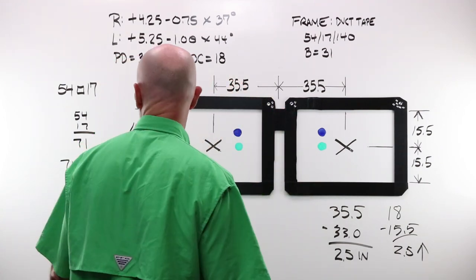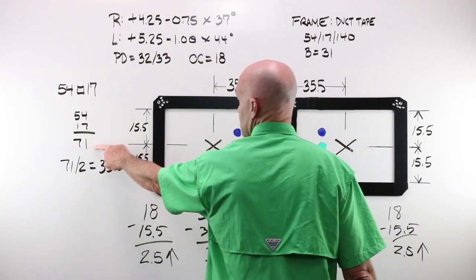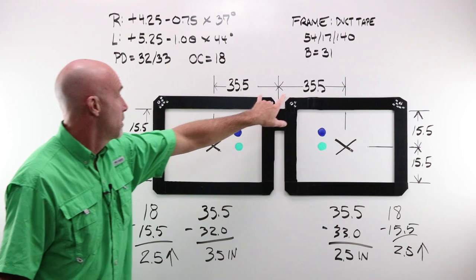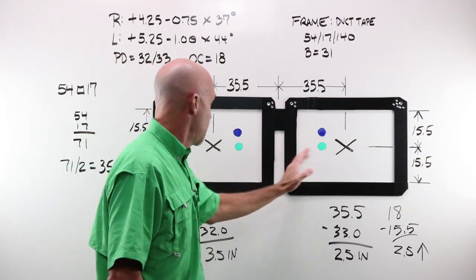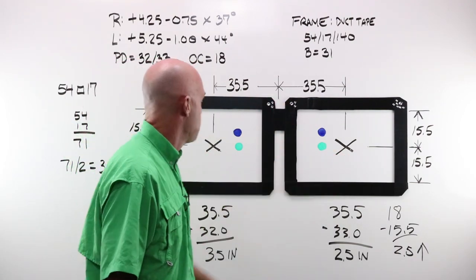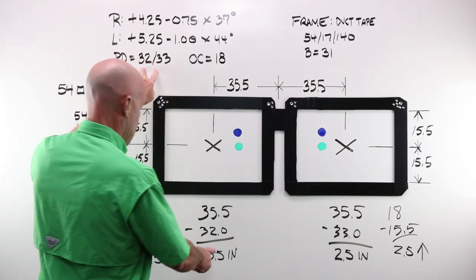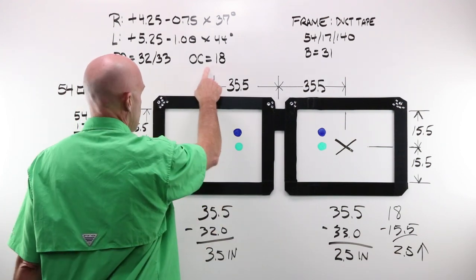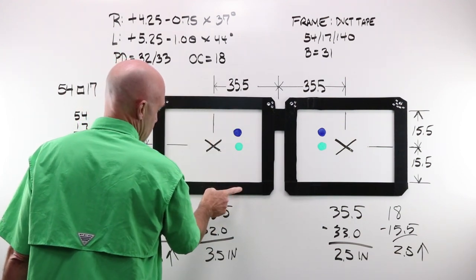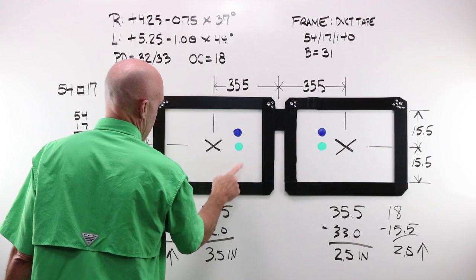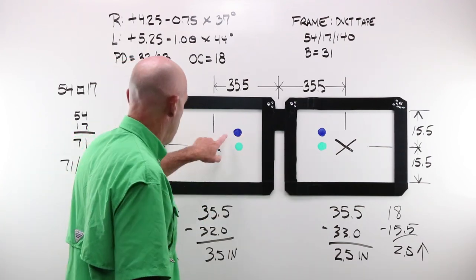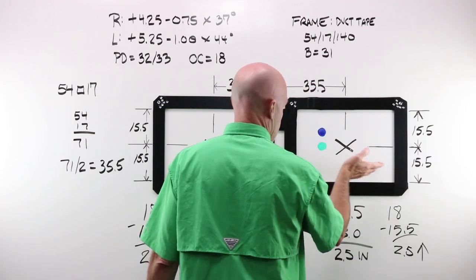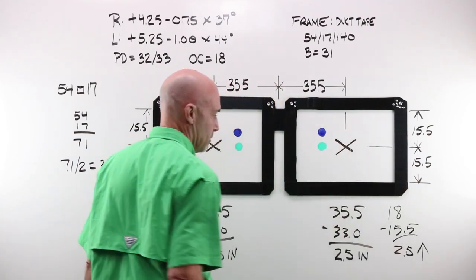Quick review. Where did numbers come from? Boxing system for a frame of 71. 71 divided by 2 gives me 35.5 distance, split down the middle, center to center. My human, my PD, 32 and 33. 18 is my OC height. That's how far I wanted this lens OC moved up from the bottom of the eye wire to where that pupil is. How do I calculate that? I split my B and I move it up two and a half millimeters.